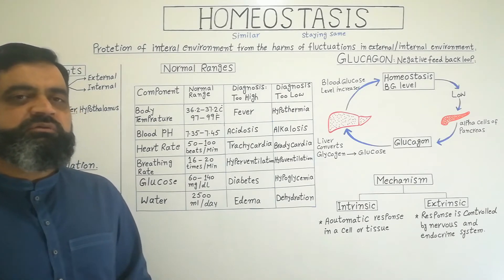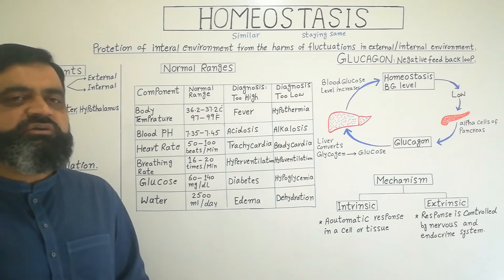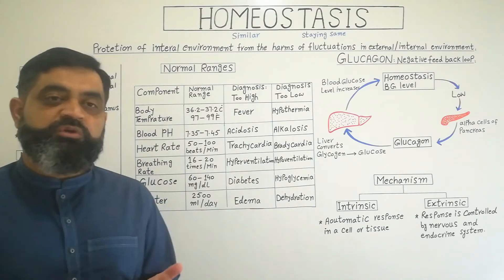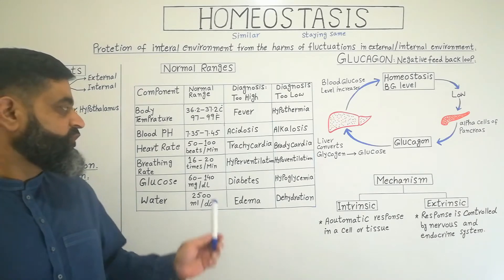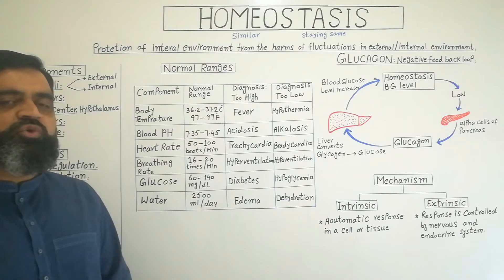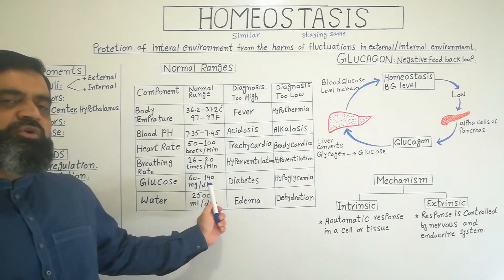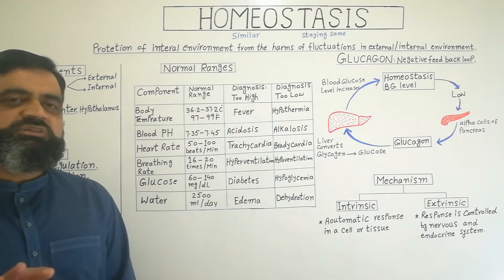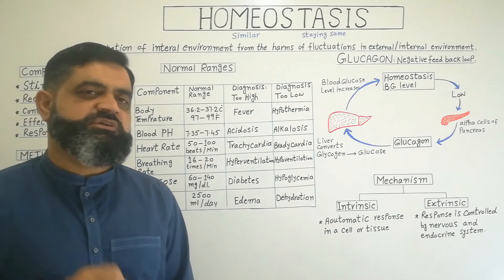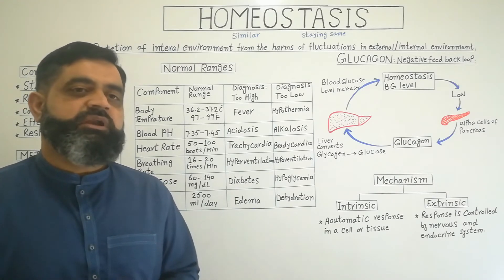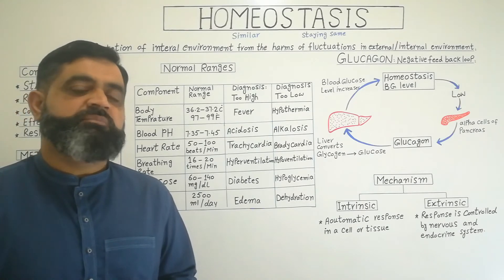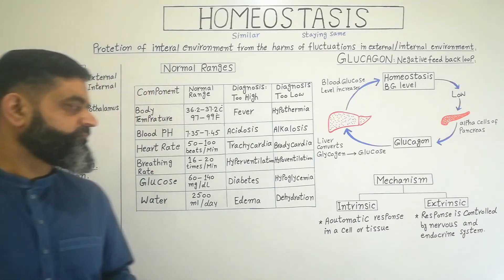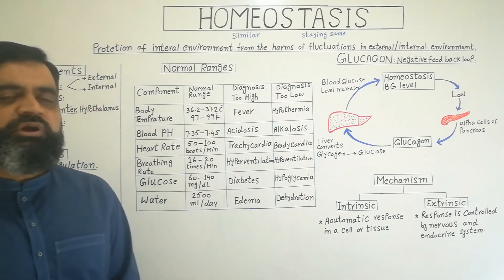Glucose level is a very important and the most common problem in the world today. Many people — young, old, and children — are experiencing problems with glucose levels: too much glucose, or diabetes. Normal glucose level is 60 to 140 milligrams per dL. If glucose level increases, it results in diabetes; if it decreases, it results in hypoglycemia. Both conditions can cause severe damage to kidneys, lungs, stomach, liver, and brain, and can even cause death.